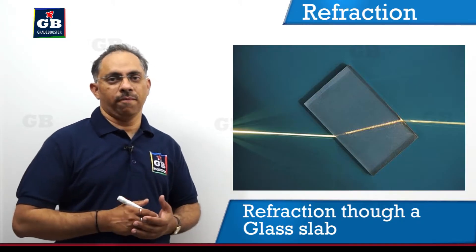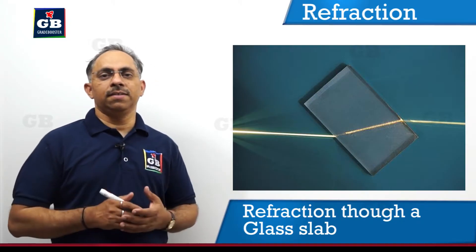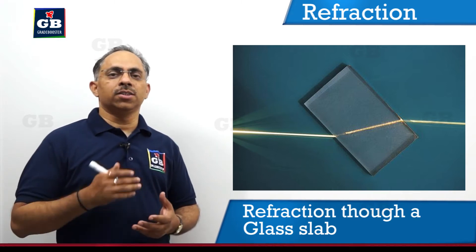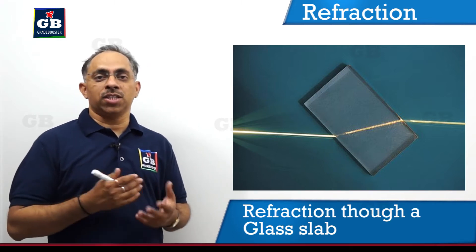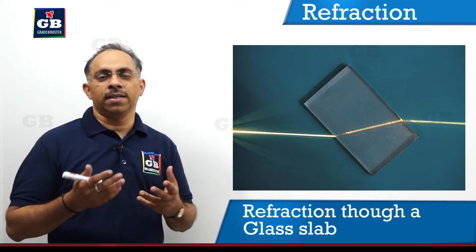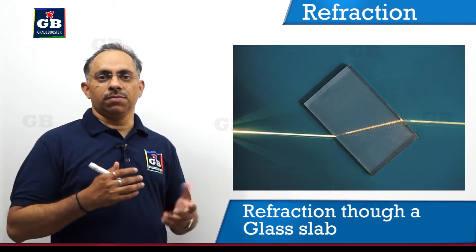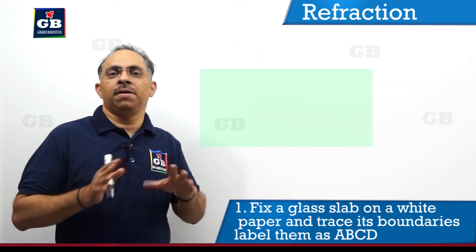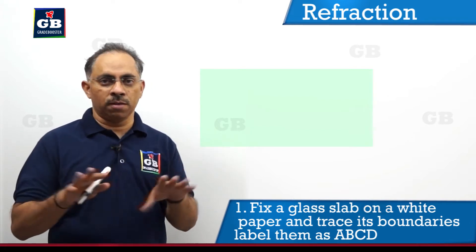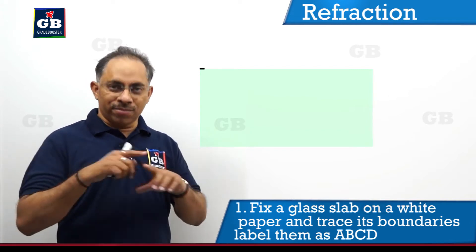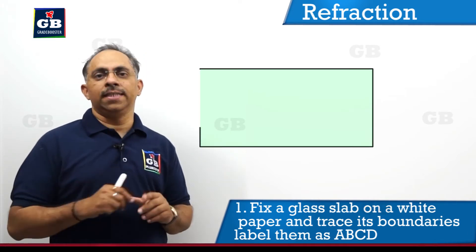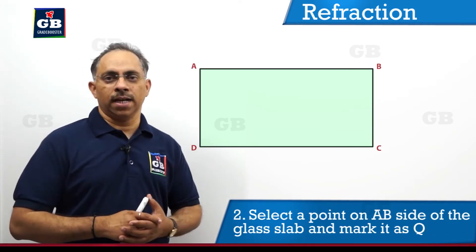If you take a glass slab — basically a cube-shaped piece of glass — and you want to study how refraction takes place through it, we can consider an activity. We will place a glass slab on a white piece of paper fixed to a drawing board and trace its boundaries. ABCD, as shown, is the boundary of the glass slab.